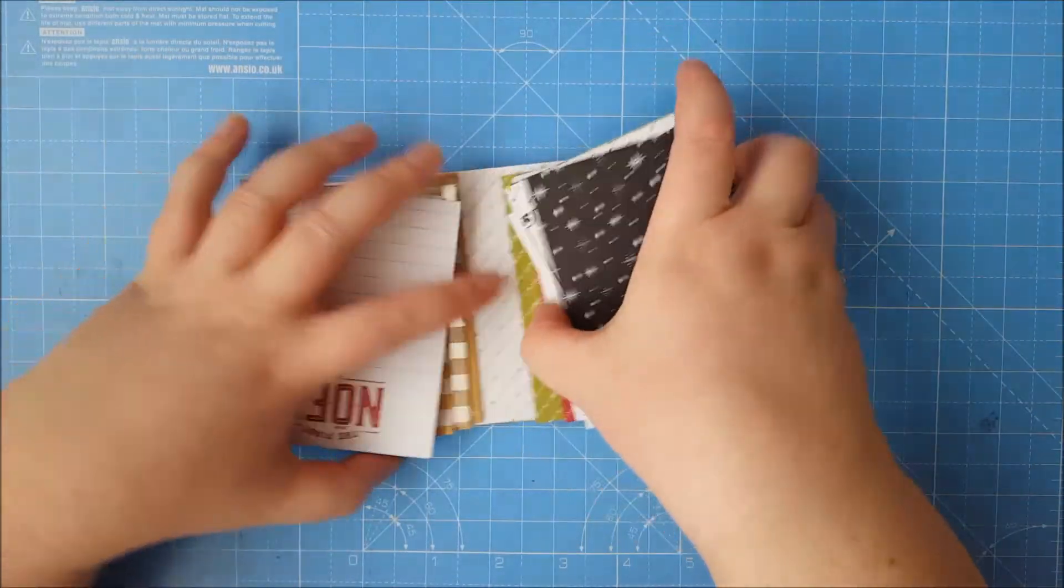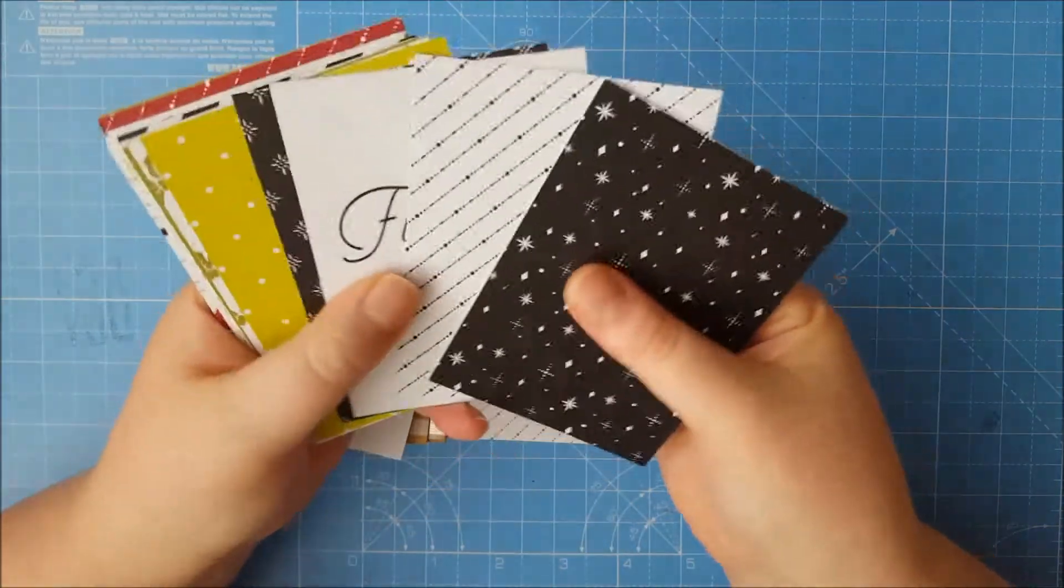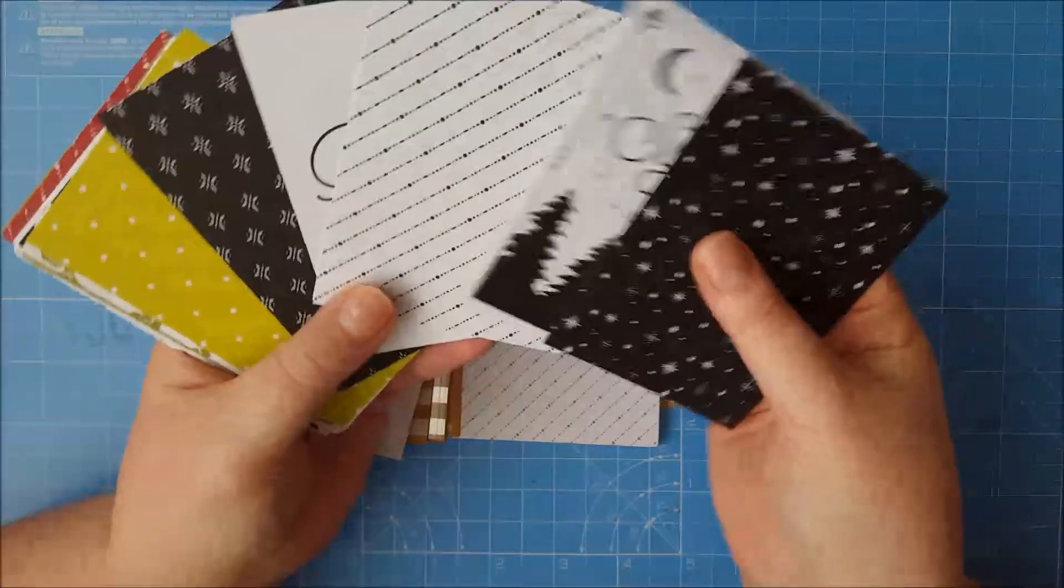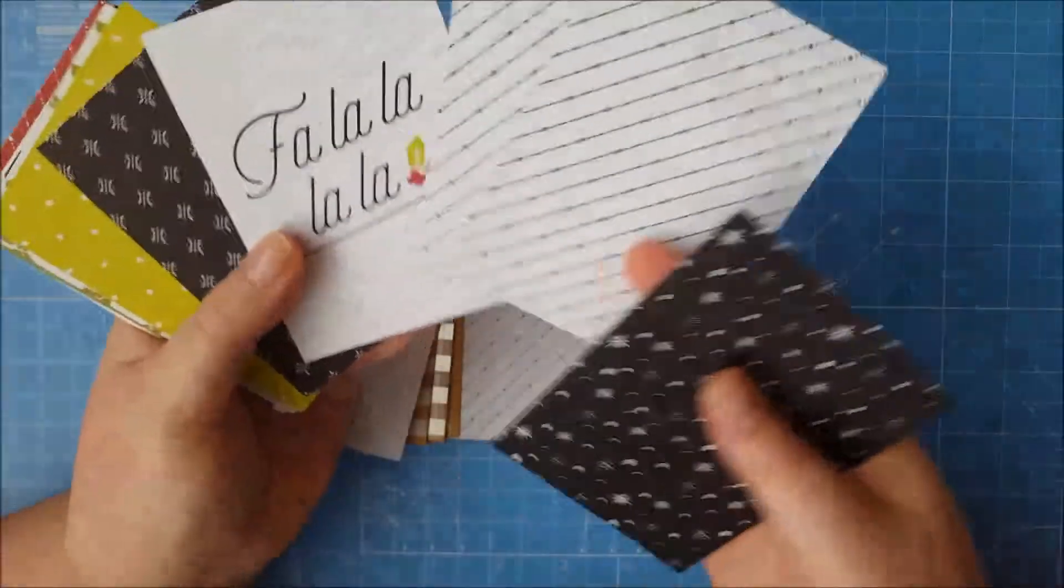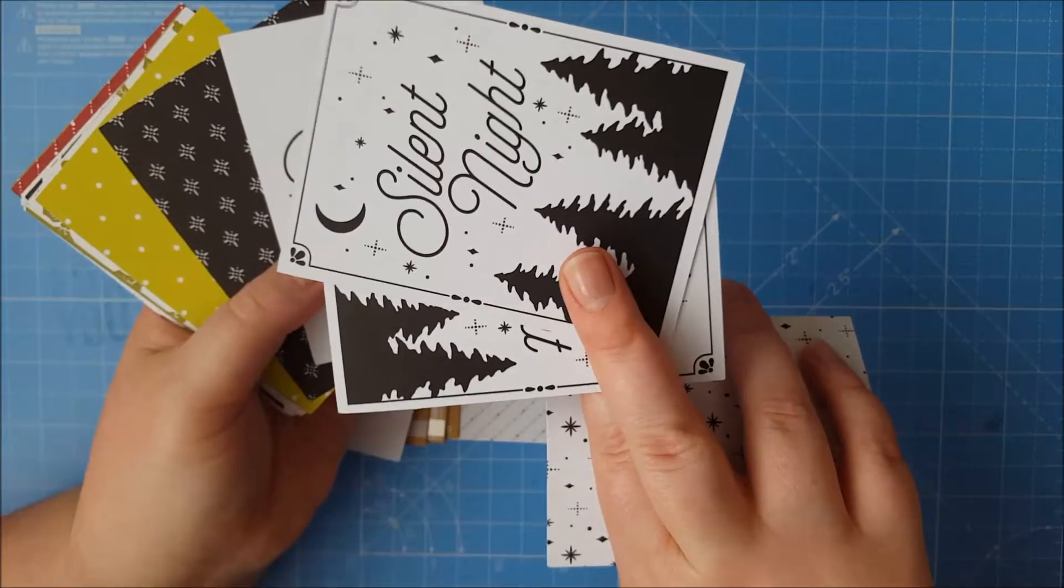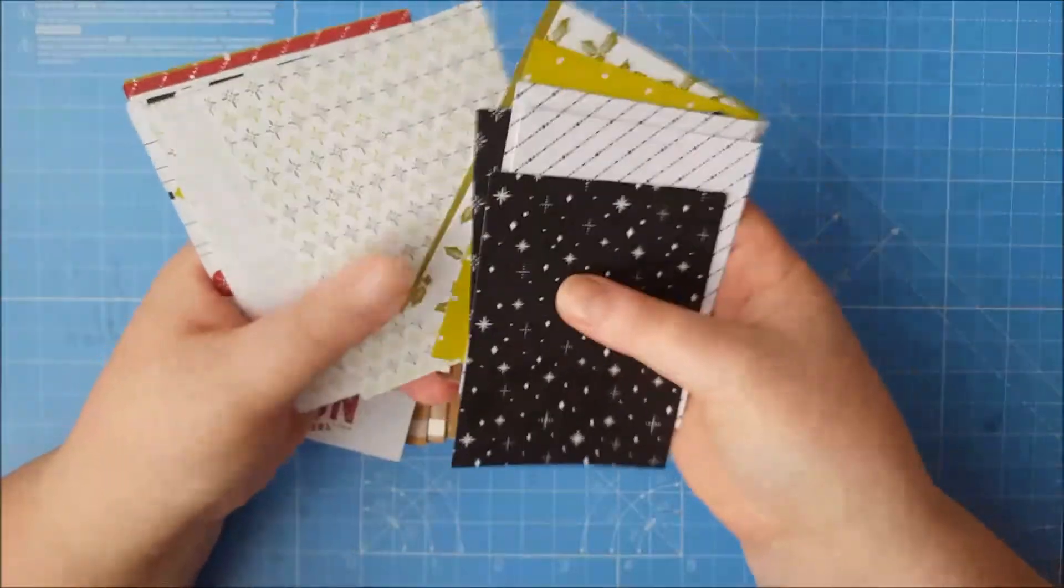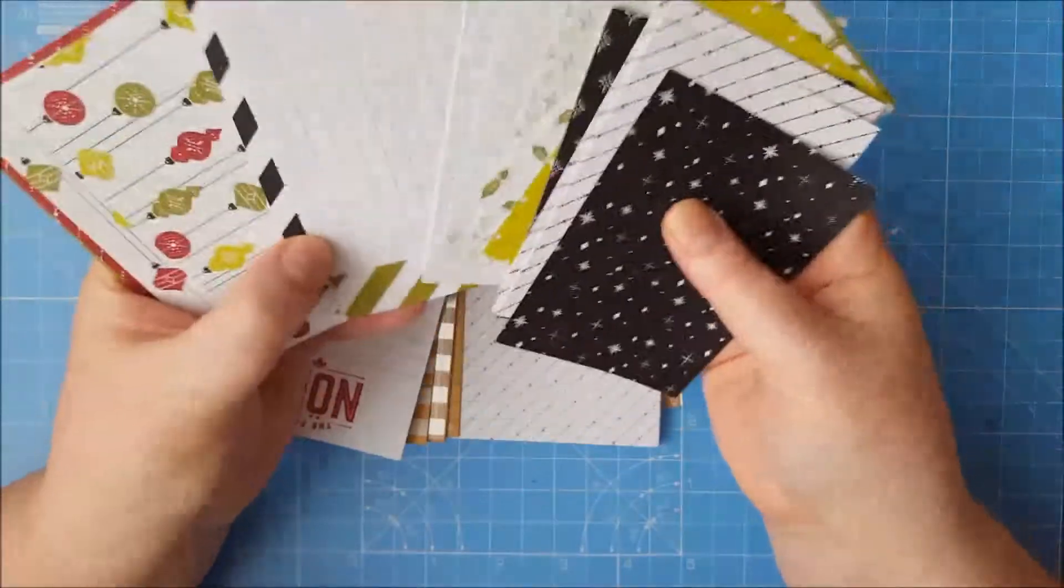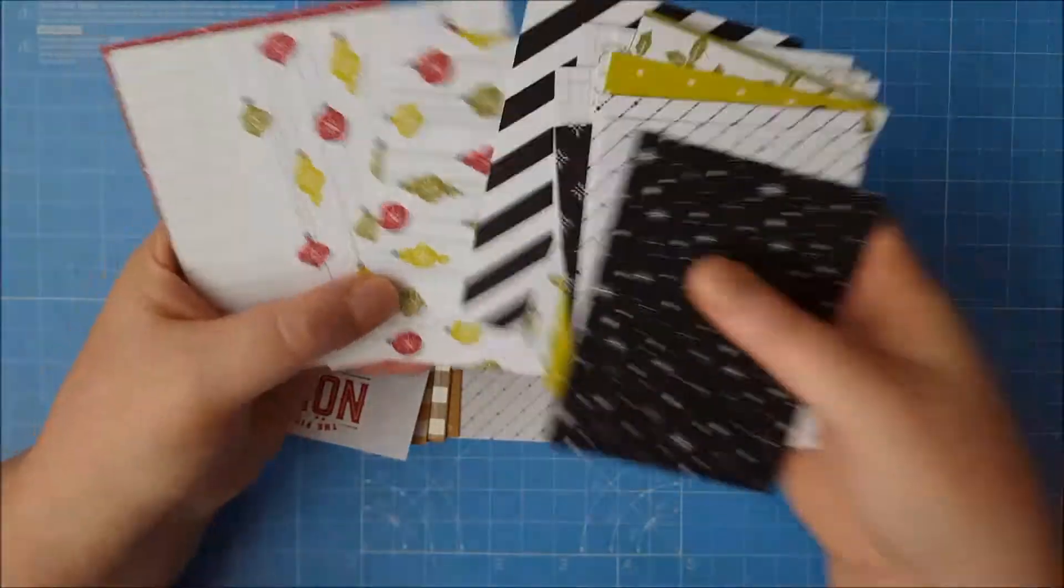So you get some smaller ones here and these fit our Memories & More pockets. You get lots and they're all double sided. So you'll get two of each, one with a cinnamon background, one with a different background. And you get some you can write on. These are really cool.